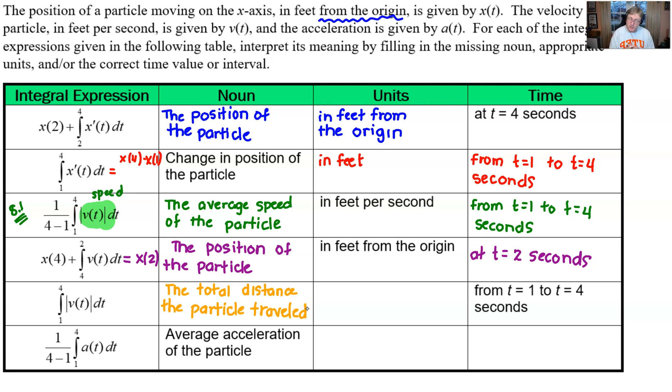Would we say feet from the origin, though, when we're talking about the total distance? And the answer is no. We don't worry about measuring distance from any starting point. It's overall what have we undergone in terms of a total length of our journey from these two times. So you're just going to say in feet. And then we'll take care of the interval or see that the interval has been taken care of for us in that third column.